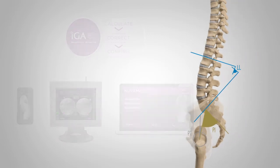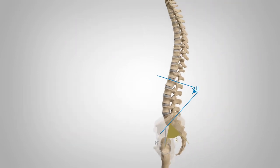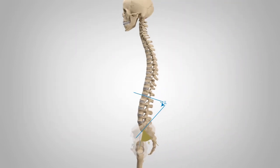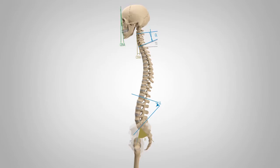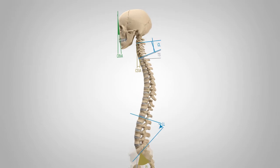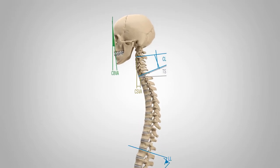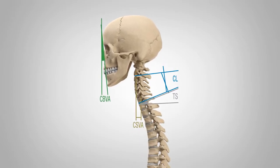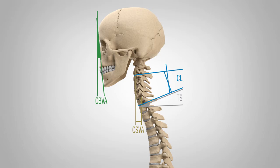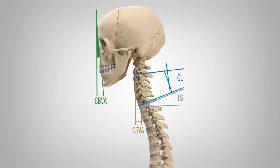But spinal regions do not operate independently. Both cervical and thoracolumbar alignment depend heavily upon one another. Early data suggests that cervical alignment may be just as important for lasting patient outcomes. Cervical alignment matters.